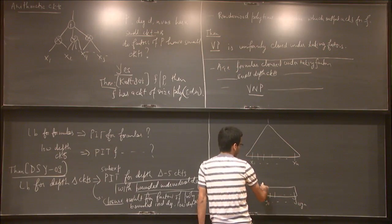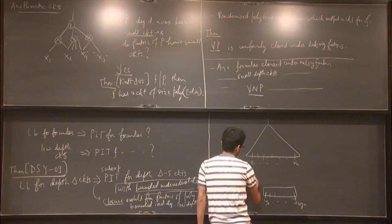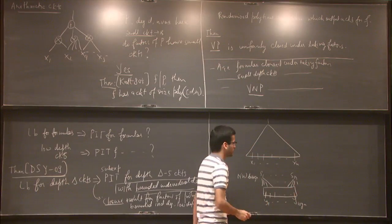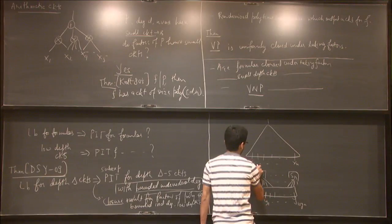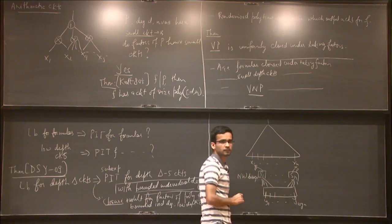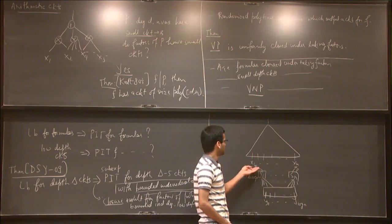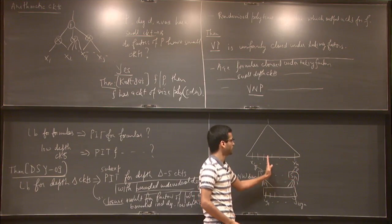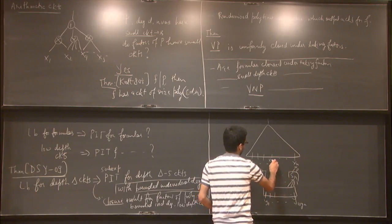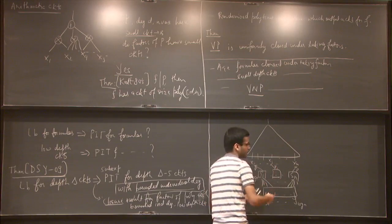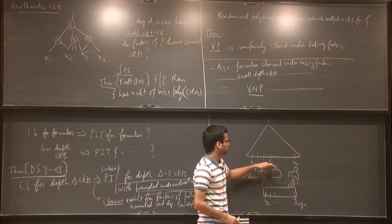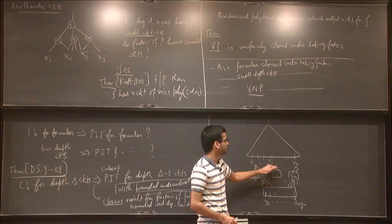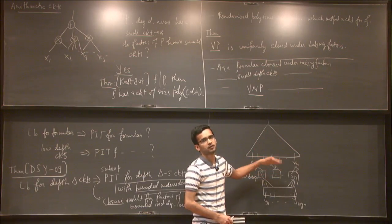The way this works is to first construct a Nisan-Wigderson design — you get subsets S₁ up to Sₙ. At this point on these sets of variables you apply your hard polynomial, then you do the hybrid argument. The hybrid argument says: let's say initially your circuit was non-zero, but after this whole operation your circuit became zero. So there must be a point where you went from non-zero to zero. At that step, say at Xᵢ, the moment you plugged in Pᵢ for Xᵢ, the polynomial became identically zero. This means Pᵢ is a root of the polynomial if you treat it as a univariate in Xᵢ — meaning Pᵢ must have a small circuit.